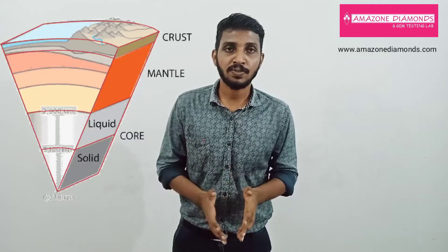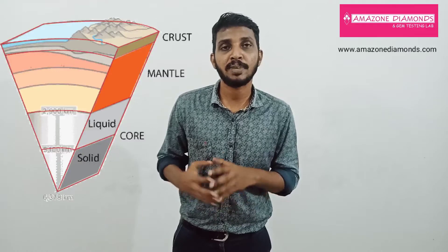Diamonds are found deep under the earth's surface, at 150 to 250 km depth in the mantle region. For diamond formation, extreme temperature and pressure conditions are needed — around 1200 degrees Celsius temperature and 725,000 pounds pressure per square inch. Diamonds are formed in the mantle region.